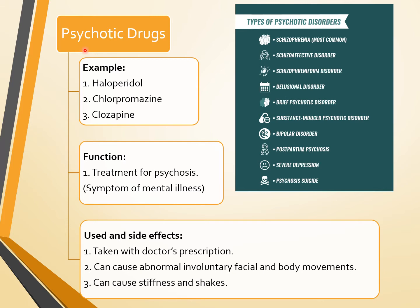The third class is psychotic drugs. Examples include haloperidol, chlorpromazine, and clozapine. Their function is to treat psychosis, which is a symptom of mental illness. Types of psychosis include schizophrenia, schizoaffective disorder, schizophreniform disorder, delusional disorder, brief psychotic disorder, substance-induced psychotic disorder, bipolar disorder, postpartum psychosis, and severe depression with psychosis. Uses and side effects: taken with doctor's prescription; can cause abnormal involuntary facial and body movements, stiffness, and shaking.